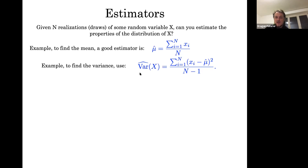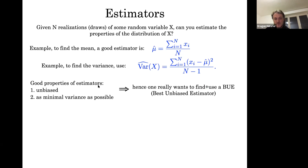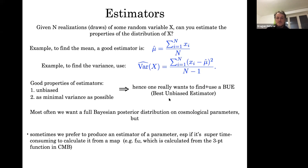Most of the time we want the full posterior distribution on some parameter, but sometimes you want estimators. For example, the Landy-Szalay estimator. There's really no one way to find an estimator — you have to sniff around and try to figure out how to build one for something. It's good to know that sometimes we need estimators. Moving right along: the Gaussian distribution is probably familiar to everyone. I'll also have things in these notes that almost everyone knows.